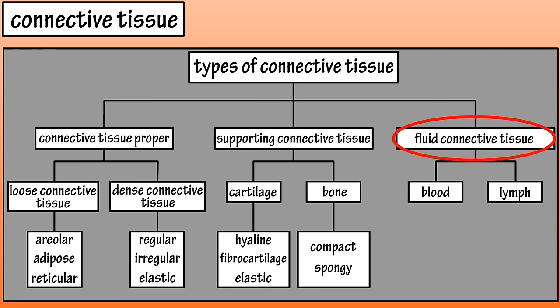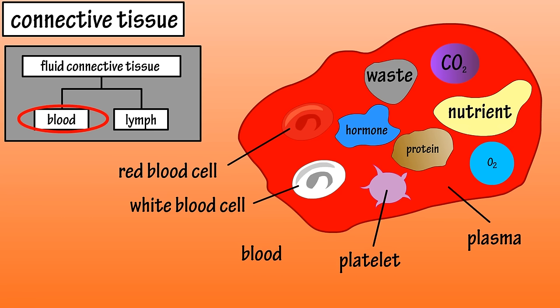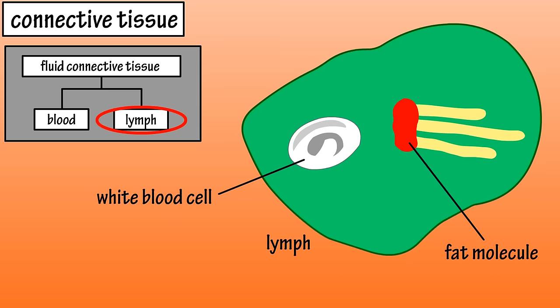The third classification of connective tissues is fluid connective tissue, which has two subgroups: blood and lymph. Blood tissue is comprised of formed elements and has a liquid ground substance called plasma. The formed elements include red and white blood cells and platelets. The plasma contains proteins as well. Red blood cells transport oxygen and carbon dioxide, white blood cells protect the body from foreign invaders, and platelets help with clotting the blood. The plasma transports nutrients, wastes, and hormones throughout the body. Lymph originates from the interstitial fluid that surrounds tissue cells and transports fats and white blood cells throughout the body.